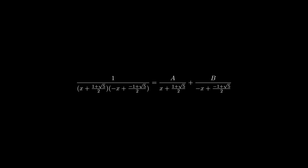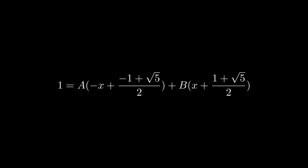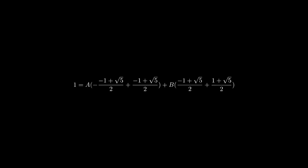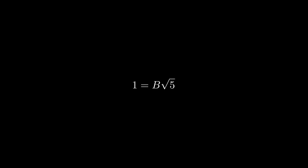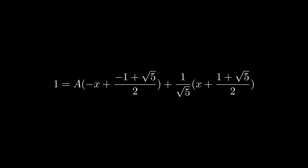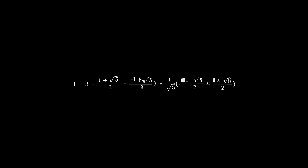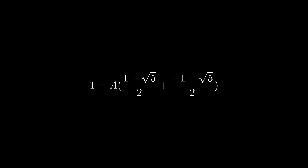After we factor it, we set it equal to two unknown variables, a and b, over each of the factors. We want the values of a and b that make the equation true. We multiply both sides by the denominator of the left side. To find the unknowns, we choose values of x that will make one of the variables disappear — this is easy to see since the equation is already factored. After some simplifying, we know what b is equal to. We substitute b back and solve for a using a value of x that cancels the right side. After simplifying, we know a and substitute it back into the equation.